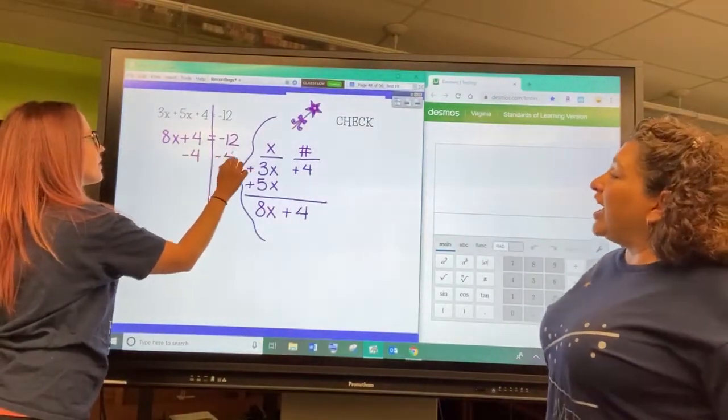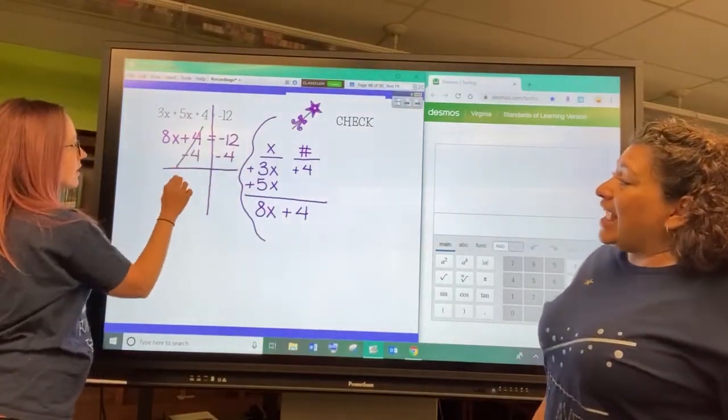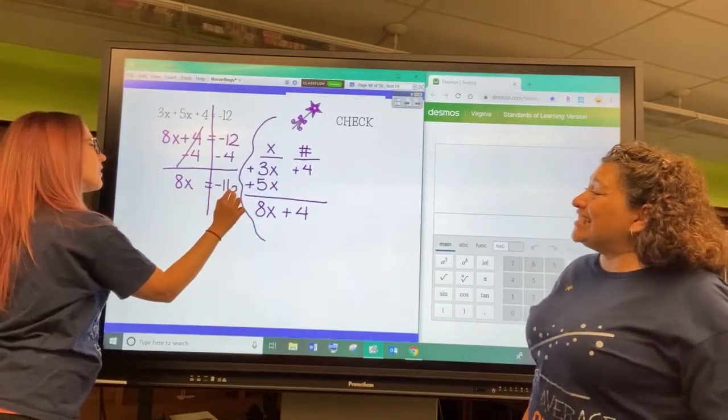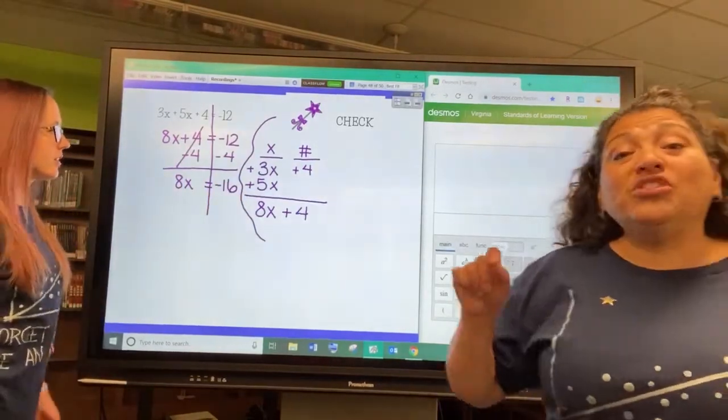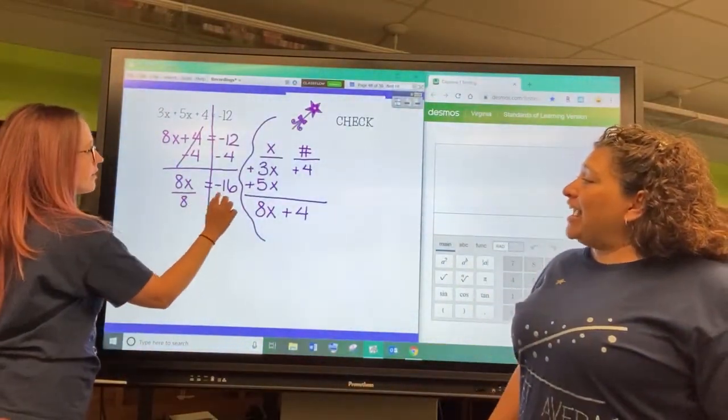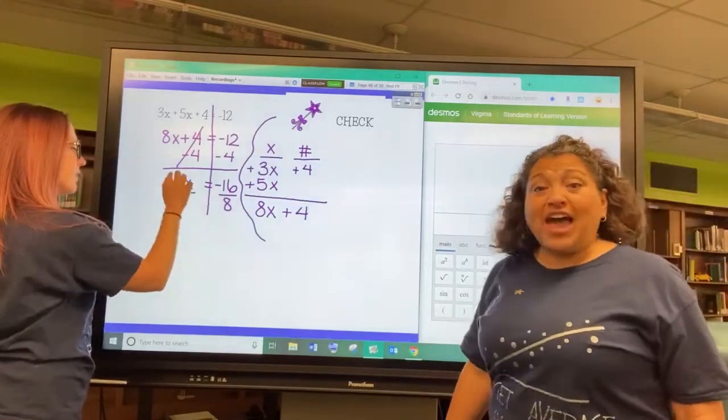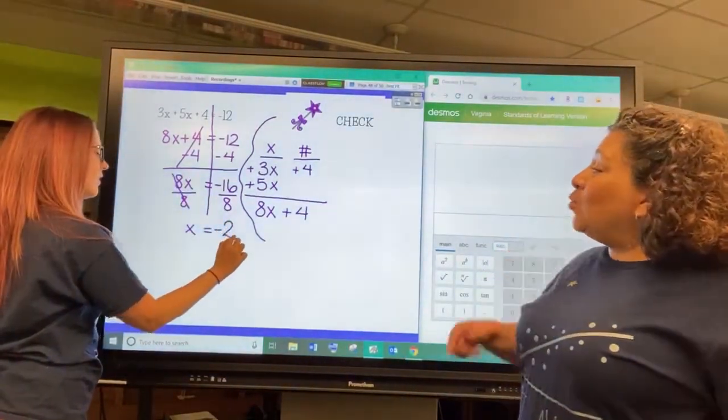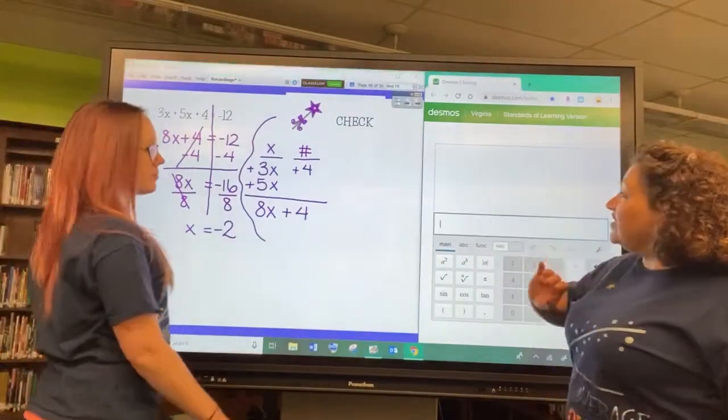On both sides. And that cancels out that. Brings down your 8X, and you end up with a negative 16. Please use Desmos for this. You don't want to make mistakes. Then you're going to go ahead from there. 8 times X to undo that, the inverse is division. And you end up with X equals negative 2.